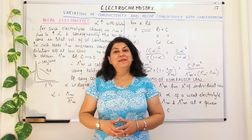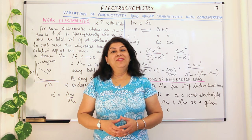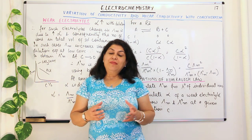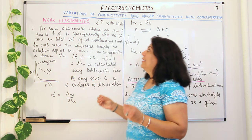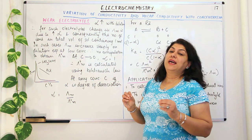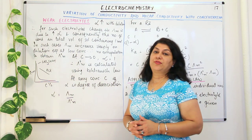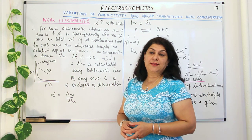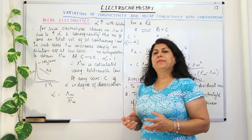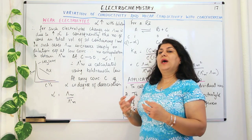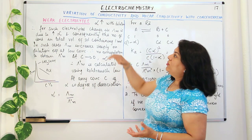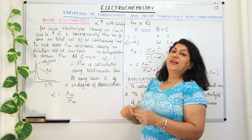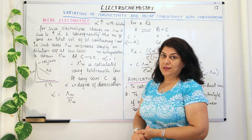Hello, I am Sima and welcome to part 17 of the chapter electrochemistry. We were discussing the variation of conductivity and molar conductivity with concentration and I told you about strong electrolytes. Let us now understand what happens when you have a weak electrolyte and how the concentration of a weak electrolyte affects its conductivity or molar conductivity.